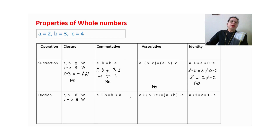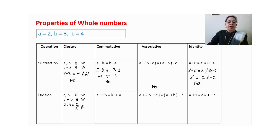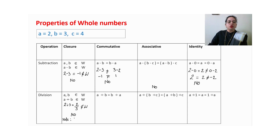For division: 2 divided by 3 equals 2/3. These two numbers are not divisible and fractions are not in whole numbers, so we cannot observe closure property in division of whole numbers. Very importantly, the denominator should not be 0 — we cannot divide any number by 0, so b must not equal 0.